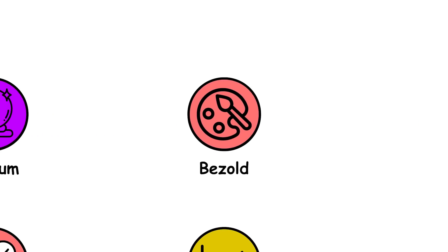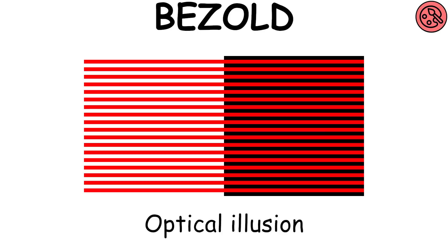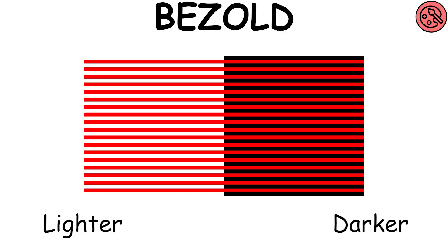Bezold effect. The Bezold effect is an optical illusion that demonstrates how a color can appear different depending on its relationship with adjacent colors.